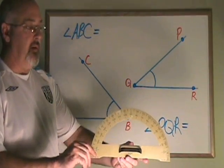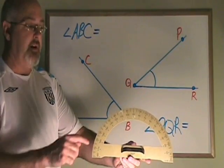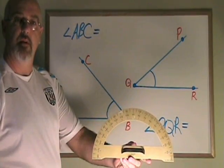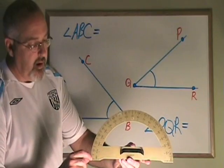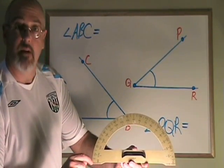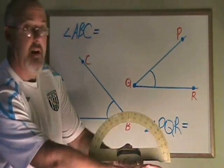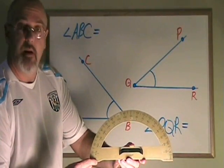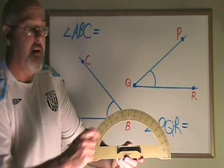One thing that can make a protractor a little bit confusing to use is that it has two sets of numbers on the outer edge. On the outside, we have a set of numbers that counts from 0 to 180. On the inside, we have numbers from 180 to 0.